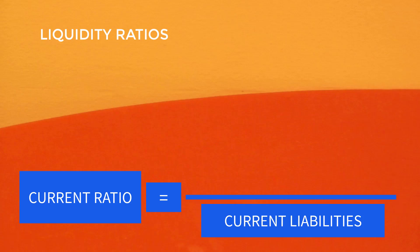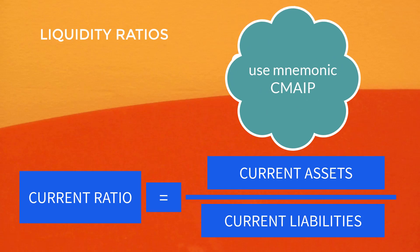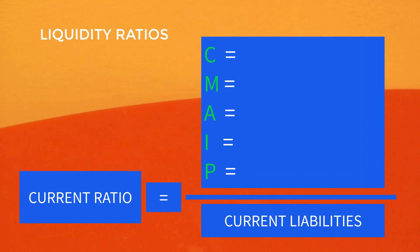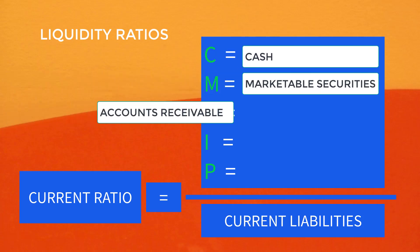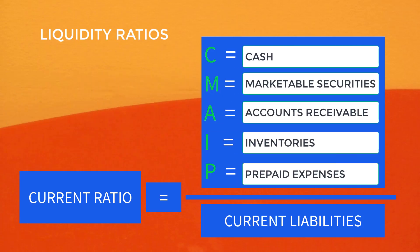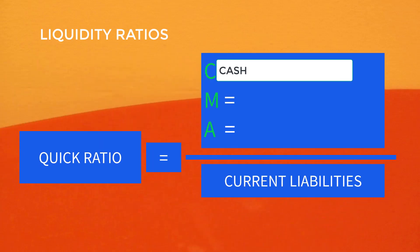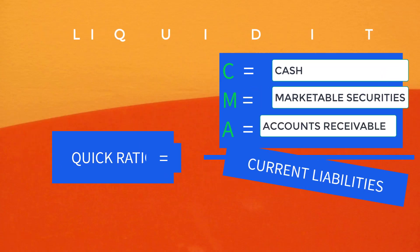For current ratio, the numerator is all the current assets. You can think of the mnemonic CME IP: in current ratio, CME IP stands for cash, marketable securities, accounts receivable, inventories, and prepaid expenses. For the numerator of quick ratio, only use the mnemonic CME, which stands for cash, marketable securities, and accounts receivable.